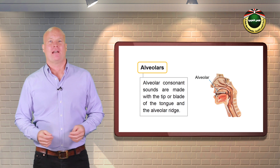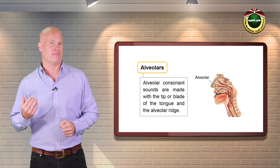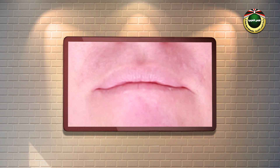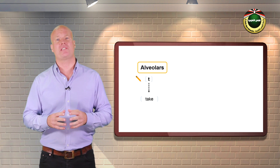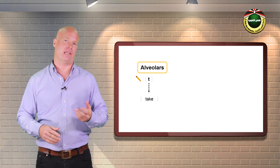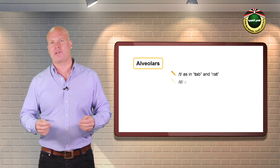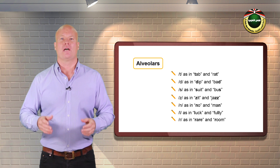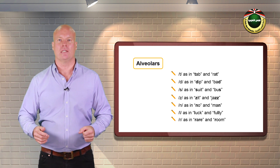Alveolars. Alveolar consonant sounds are made with the tip or blade of the tongue and the alveolar ridge. T as the first sound in take. Notice how the tip or blade of the tongue touches the alveolar ridge as illustrated in the diagram. English alveolar sounds are t, d, s, z, n, l, and r.